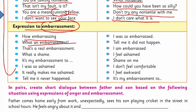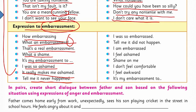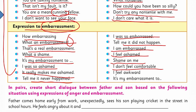'How embarrassing!' 'What an embarrassment!' — aap apostrophe ka use yahan par dekh sakte hain. Strong emotions hain. 'That's a real embarrassment,' 'What a shame,' 'It's my embarrassment too,' 'I was so ashamed,' 'It really makes me ashamed,' 'Tell me it never happened,' 'I was so embarrassed,' 'Tell me it did not happen,' 'I'm embarrassed,' 'I feel ashamed,' 'Shame on me,' 'I don't feel comfortable,' 'I feel awkward,' 'It's my embarrassment too.' These are the expressions of embarrassment.